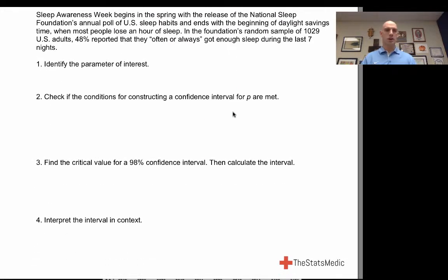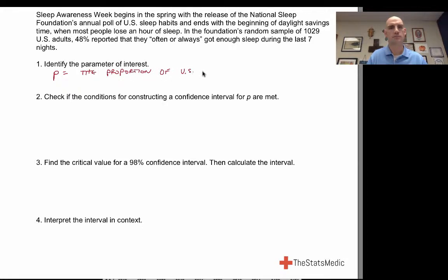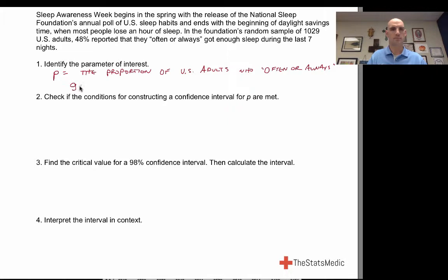Let's look at an example. Sleep Awareness Week begins in spring with the National Sleep Foundation's annual poll. In a random sample of 1,029 US adults, 48% said they always or often got enough sleep in the last seven nights. Identify the parameter of interest.